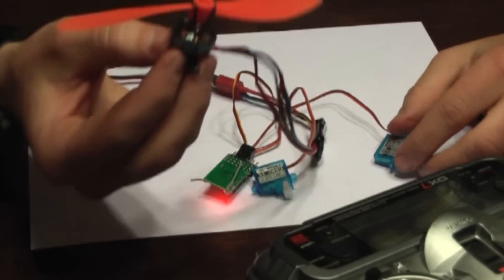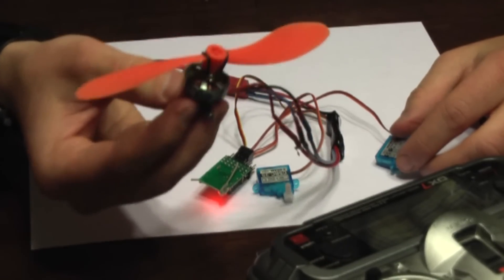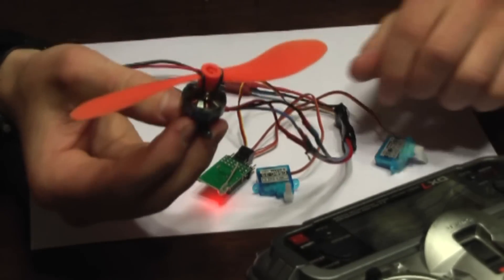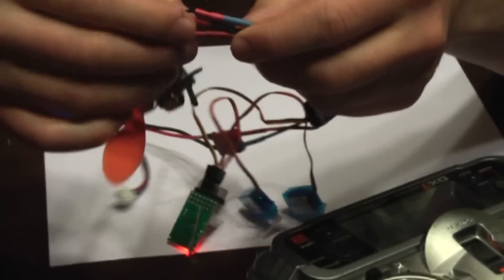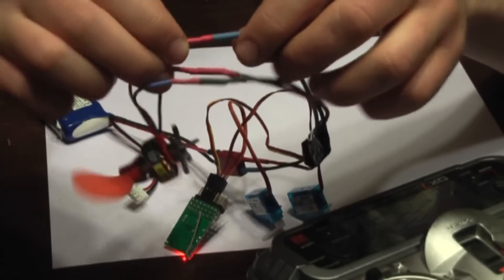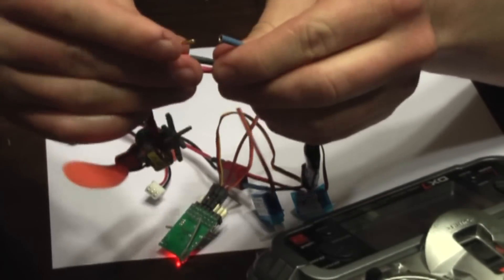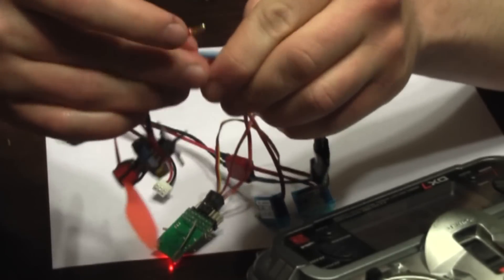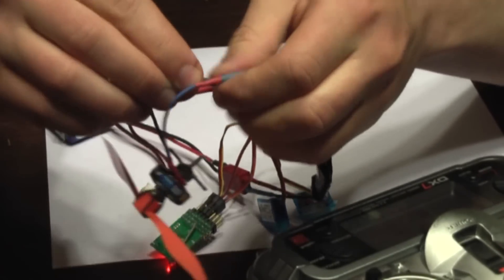Now, if you get your motor turning and you realize that it's turning the wrong direction, all you have to do is take any two of these wires and just switch them. And that's going to make your propeller turn the other direction.